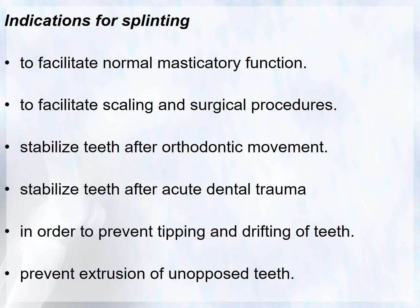Indications for splinting include: facilitating normal masticatory function; facilitating scaling and surgical procedures — for example, if a tooth is too mobile after scaling, it must be splinted before regenerative procedures such as bone grafts and membrane placement; stabilizing teeth after orthodontic movement as a retainer; stabilizing teeth after acute dental trauma; preventing tipping and drifting of teeth; and preventing extrusion of unopposed teeth where the opposing tooth is missing.